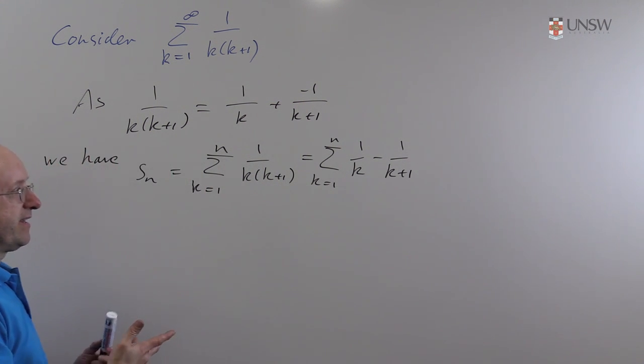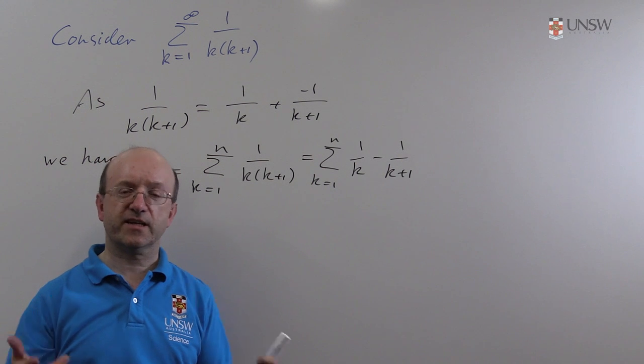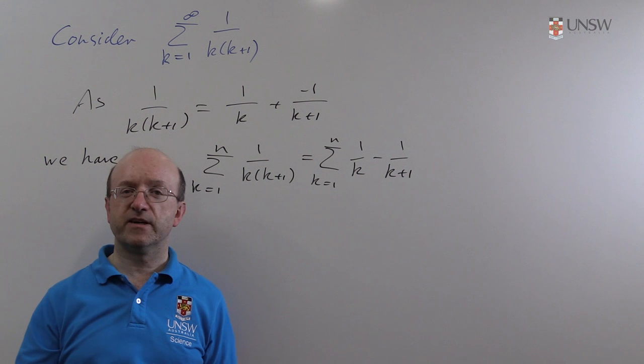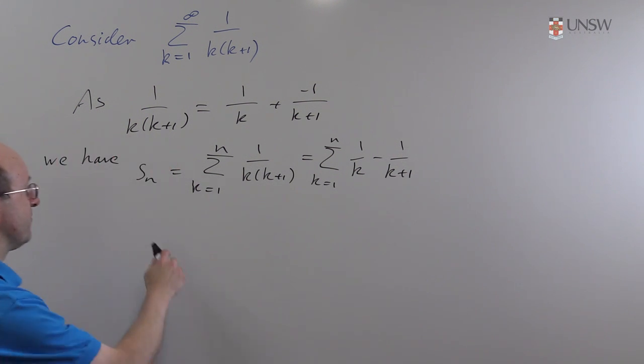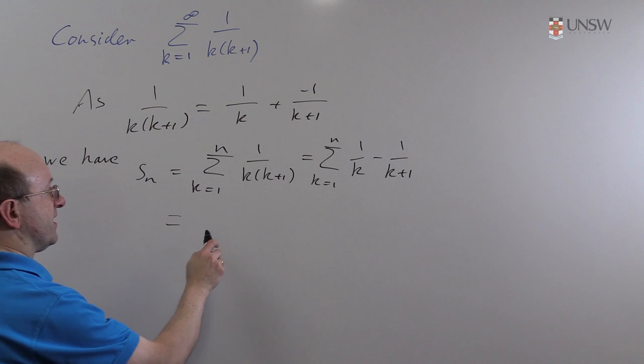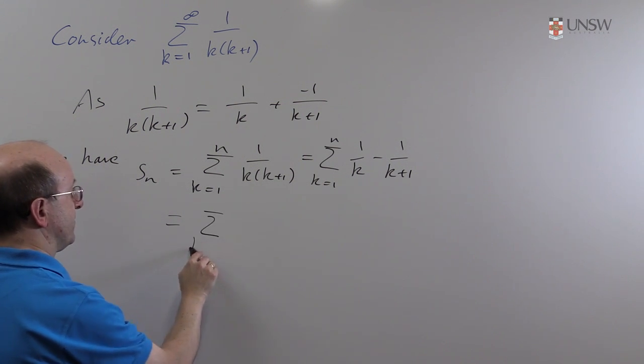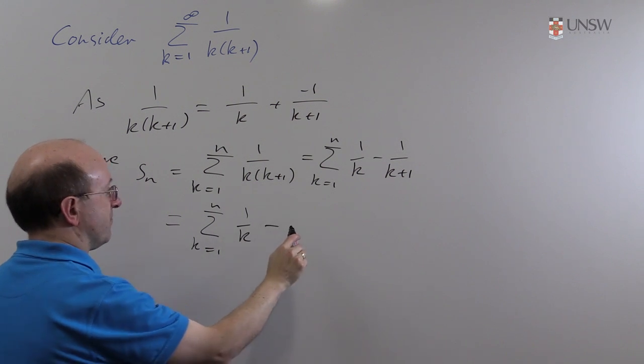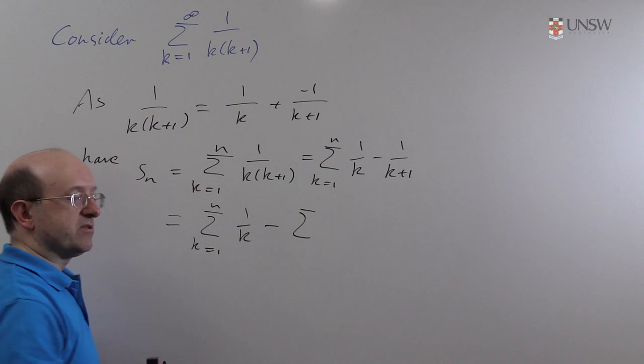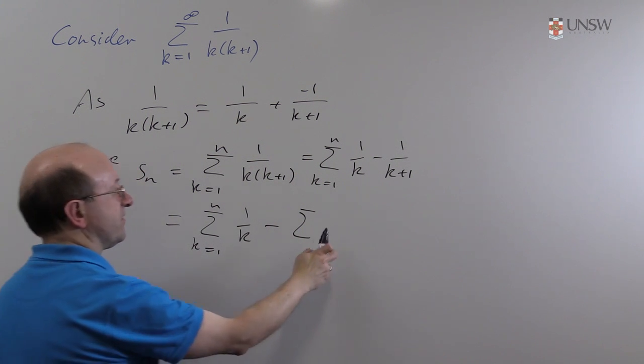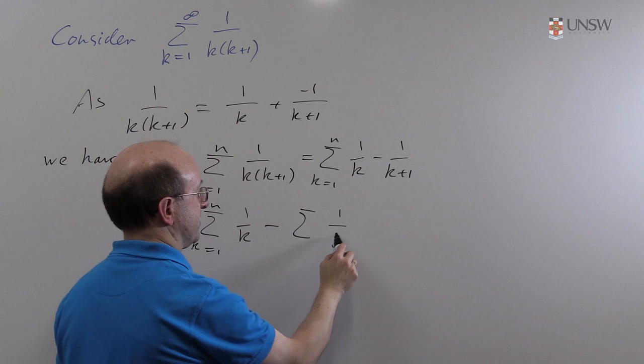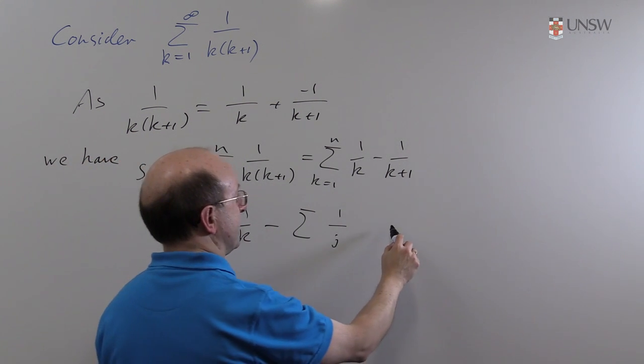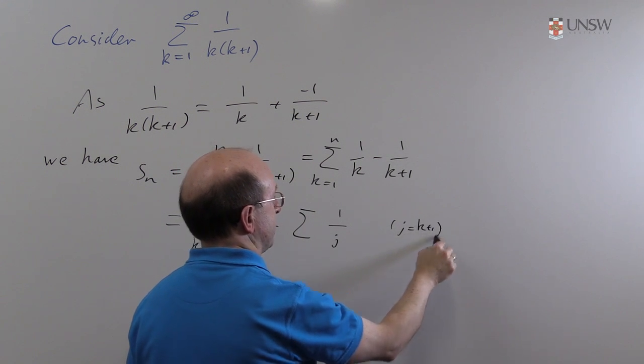That's perfectly okay and for this simple case that's probably as good a way as any. But we could also do it by doing a change of variable, just like an integration by substitution. You change the variable in the second sum. So if we write this out, the sum from k equals 1 to n of 1 over k minus the sum, now I want to change variables so I'll use another letter, I'll choose j.